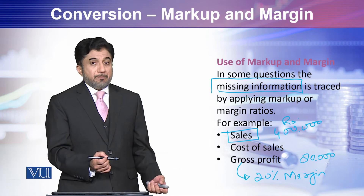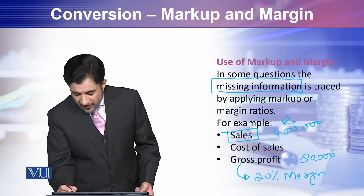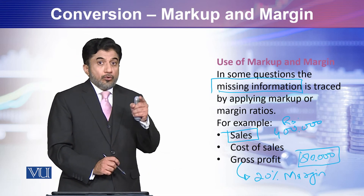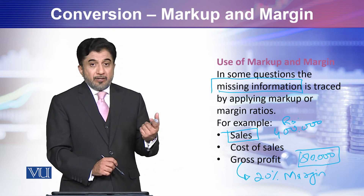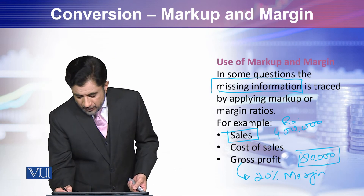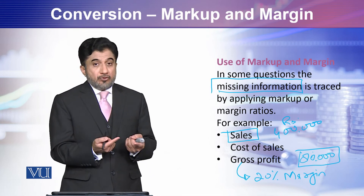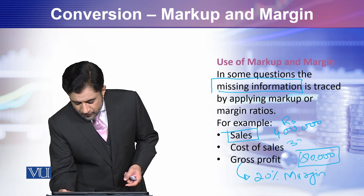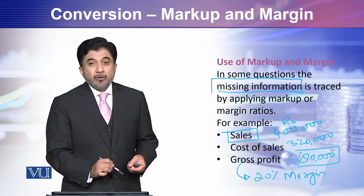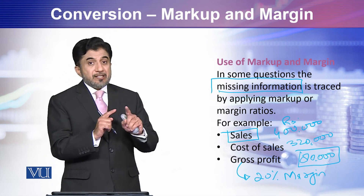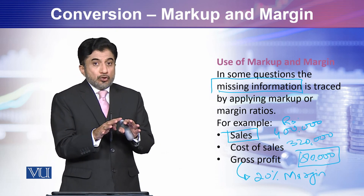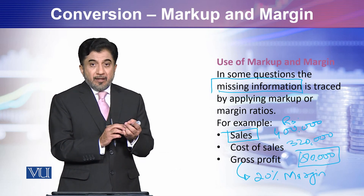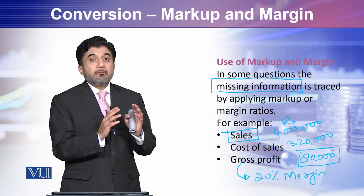So Gross Profit of 80,000 is now found — the missing information has been retrieved. Cost of Goods Sold was also missing. Now, simply subtract Gross Profit from Sales: 400,000 minus 80,000 gives us 320,000, which is your Cost of Goods Sold. This is how you use the gross profit rate — whether it is margin or markup — to find missing information, which could be Sales or Cost of Goods Sold.